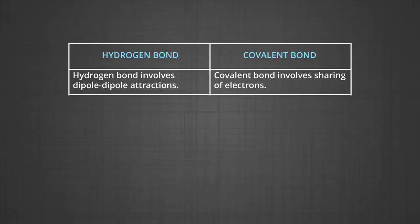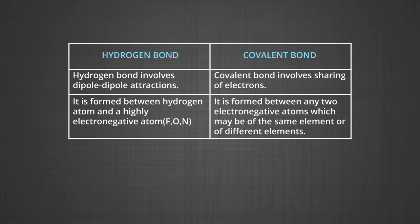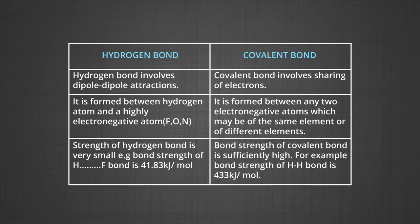Now let us discuss the difference between the hydrogen bond and the covalent bond. The hydrogen bond involves dipole-dipole attractions, whereas the covalent bond involves sharing of electrons. A hydrogen bond is formed between a hydrogen atom and a highly electronegative atom (F, O or N), whereas a covalent bond is formed between any two atoms. The strength of the hydrogen bond is very small — for example, the H···F bond strength is 41.83 kJ/mol — whereas the covalent bond strength is sufficiently high; for example, the H—H bond strength is 433 kJ/mol.